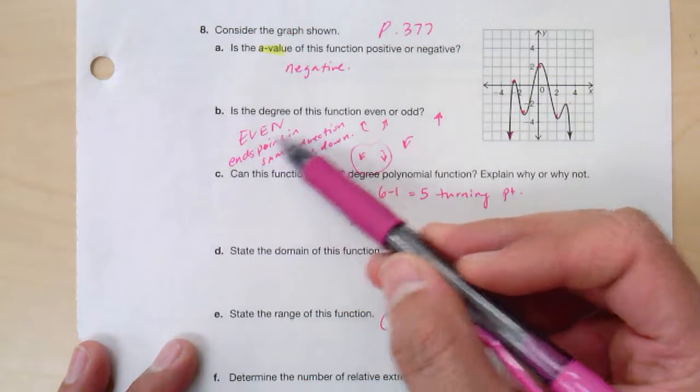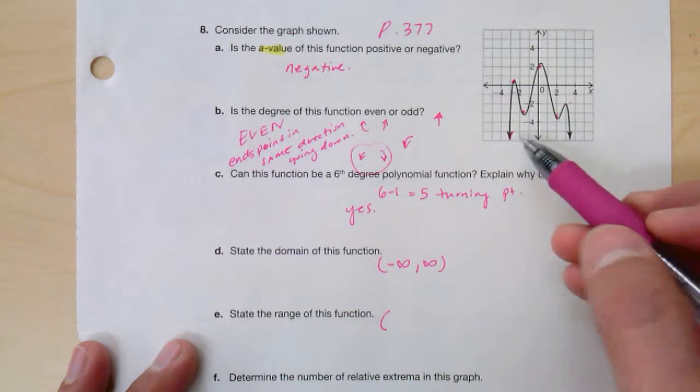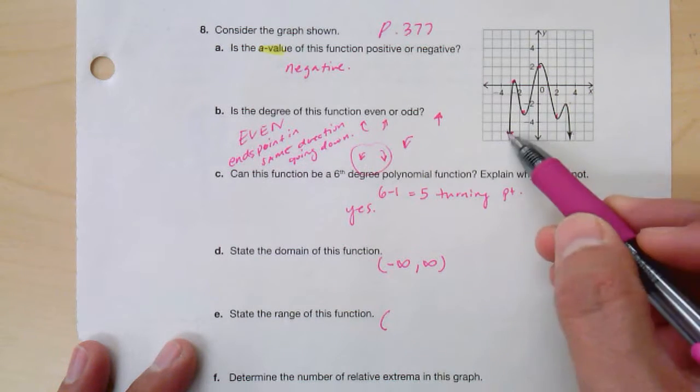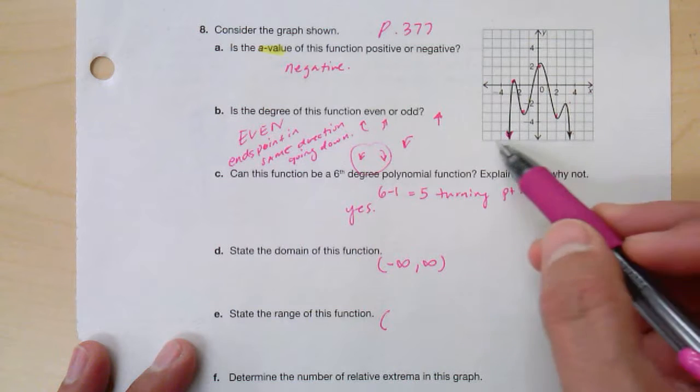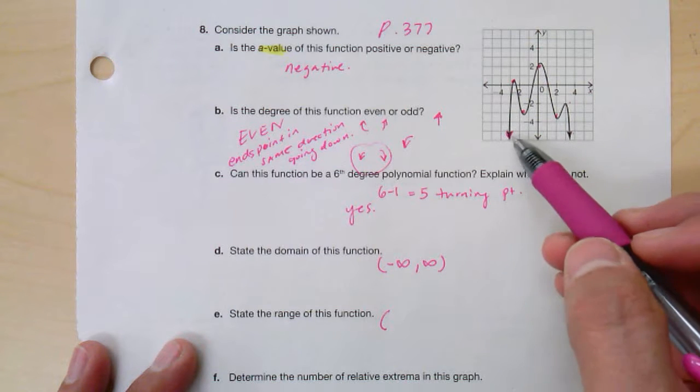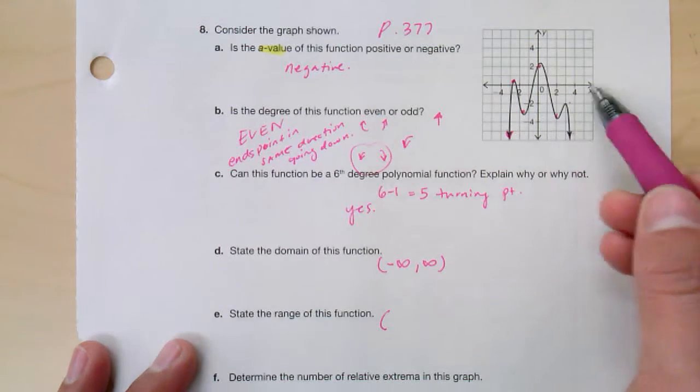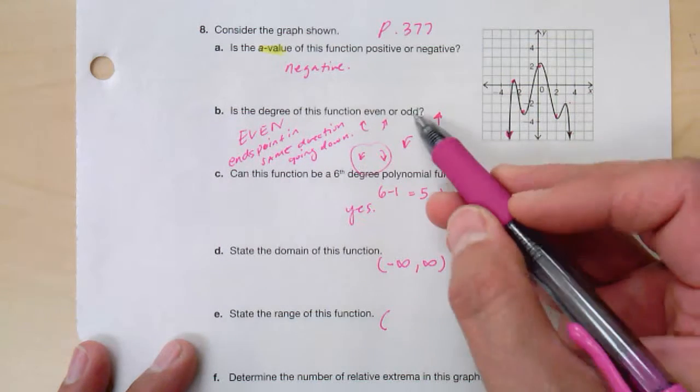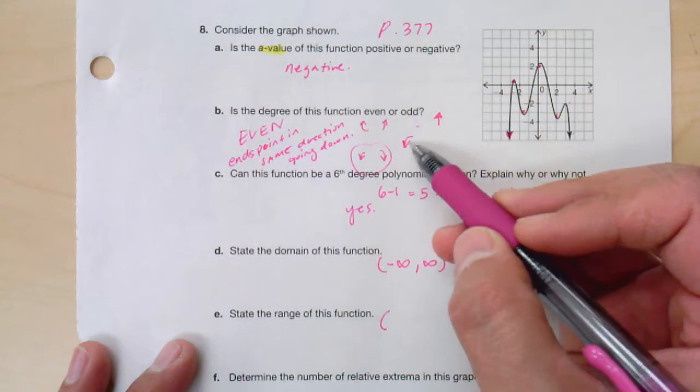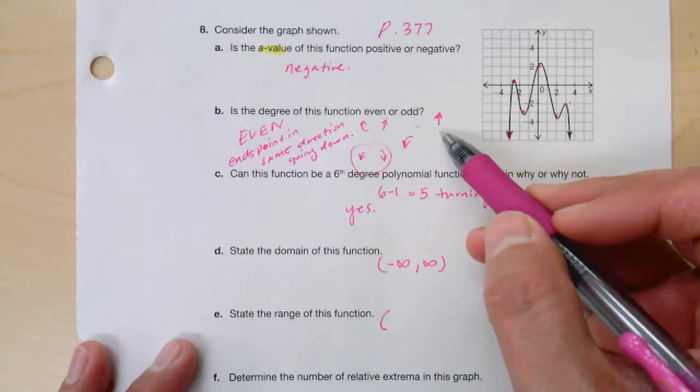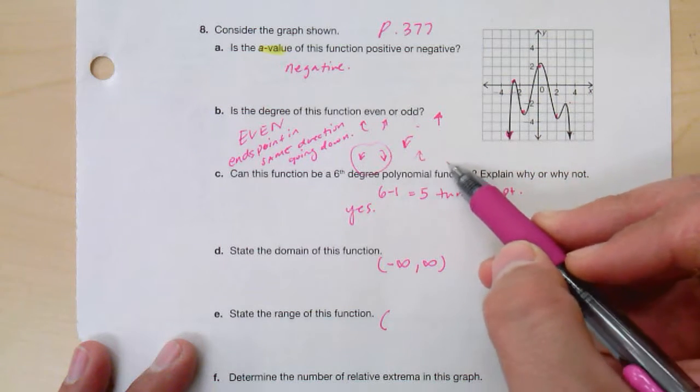The degree, again, is even because they're opening, they're both going down, the end behaviors are both going down, so that indicates that it is even. Even means their end behaviors are both going down and both going up, but this one's both going down. This is the example of the odd when one goes down and one goes up, the end behaviors, or when one goes up or one goes down.